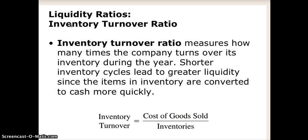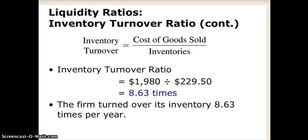If it takes a long time to turn over inventory, that could be problematic in terms of a cash drain or strain on the business. In this example from the textbook, the inventory turnover ratio is 8.63, meaning the company turns over its inventory almost nine times per year, which is good. If a company is only turning over its inventory once a year, that might be a problem — maybe it's adding inventory it doesn't need, or the inventory it has is antiquated.